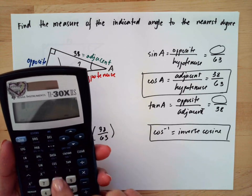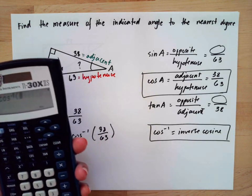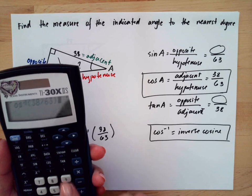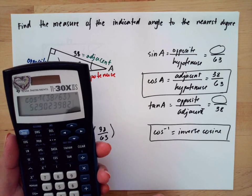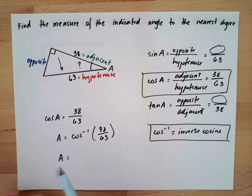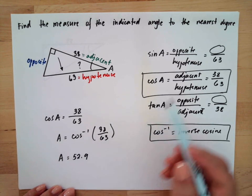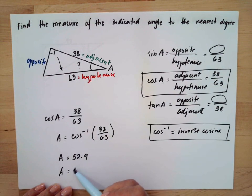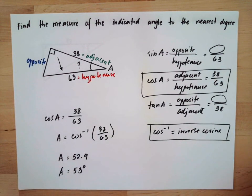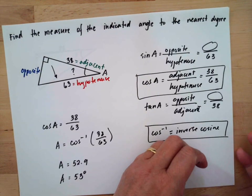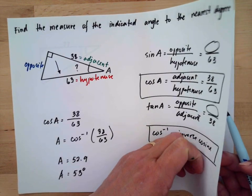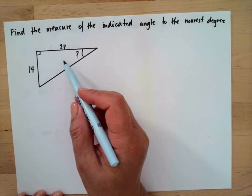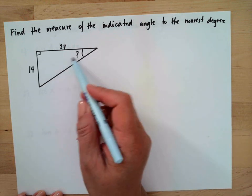Then type 38 divided by 63. This will be equal to 52.9. But since we need to round to the nearest degree, this will be 53 degrees.